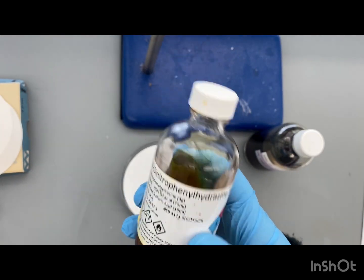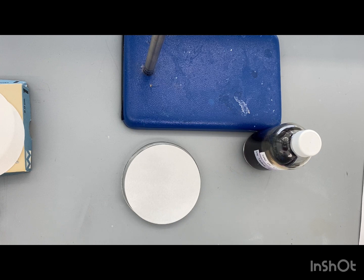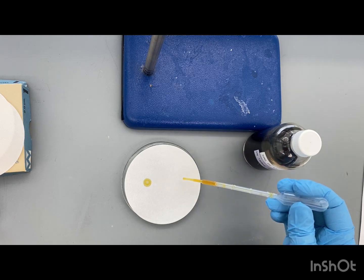Here we have the DNP test. So you're going to get your filter paper, put it on a watch glass. You're going to spot the paper twice, one for a control and one for the actual product.